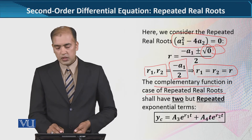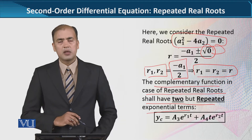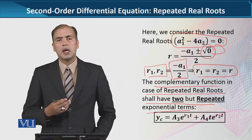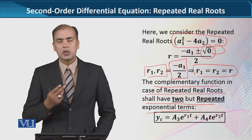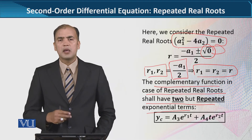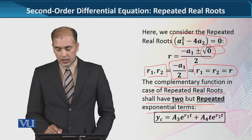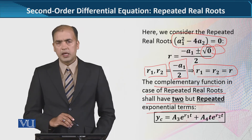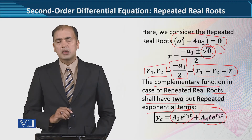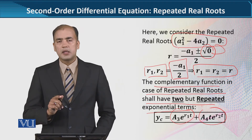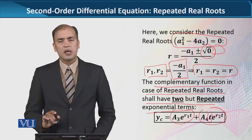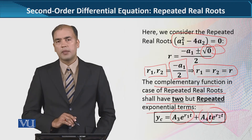The complementary function in the case of repeated real roots shall have two repeated exponential terms. Repeat کا word ہم نے اس لیے use کیا because ایک ہی root دو دفعہ آ رہا ہے - اسے double real roots یا equal real roots بھی کہتے ہیں۔ اس formula میں دو components ہیں، لیکن تھوڑا فرق ہے: دوسری term کے اندر ایک t multiply ہو رہا ہے - remembering this formula.